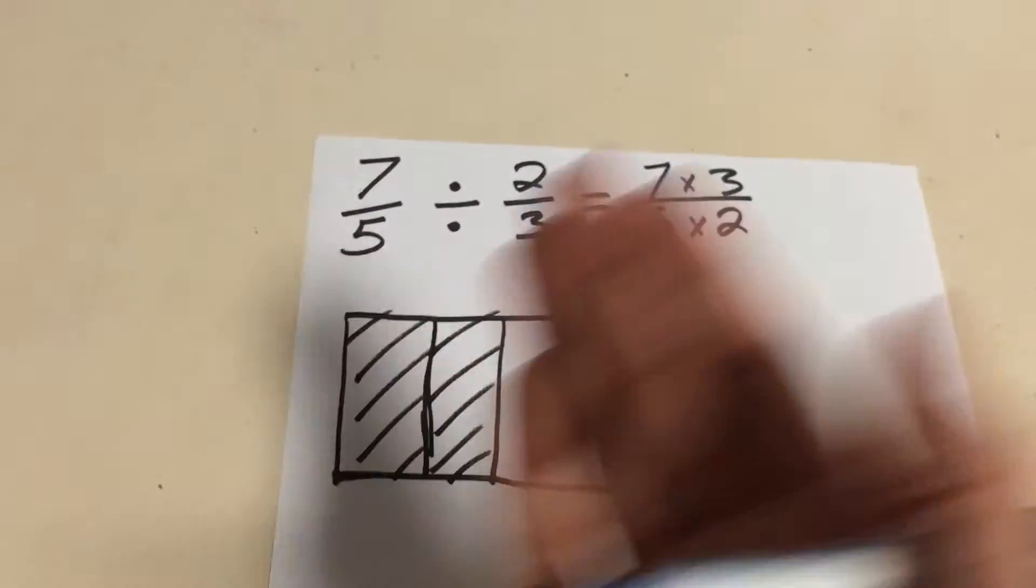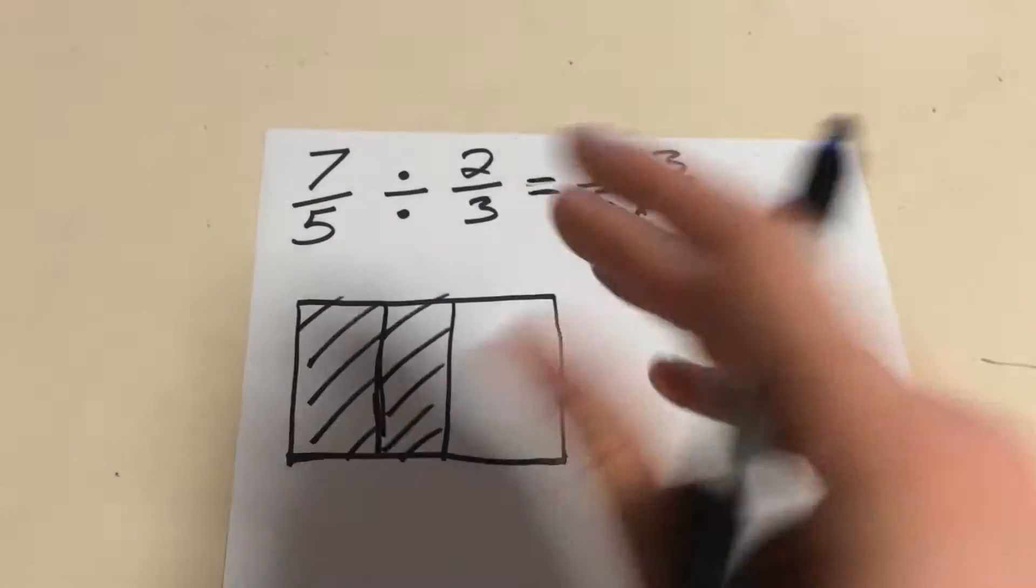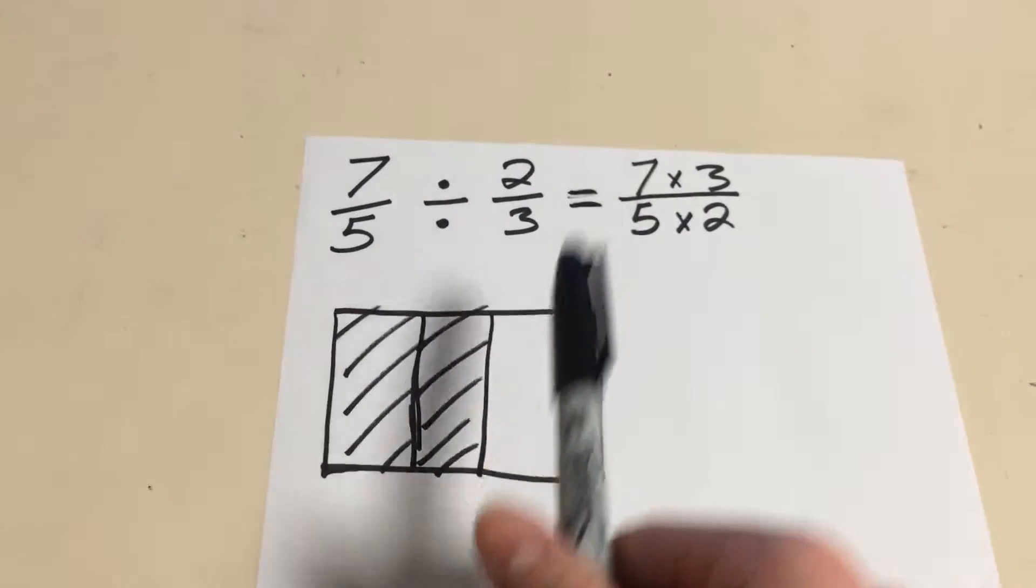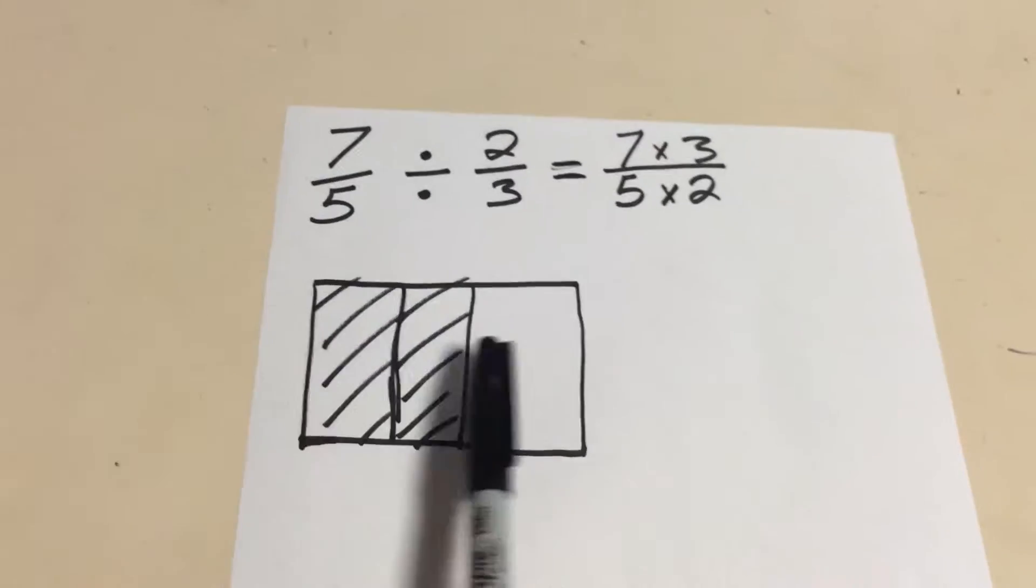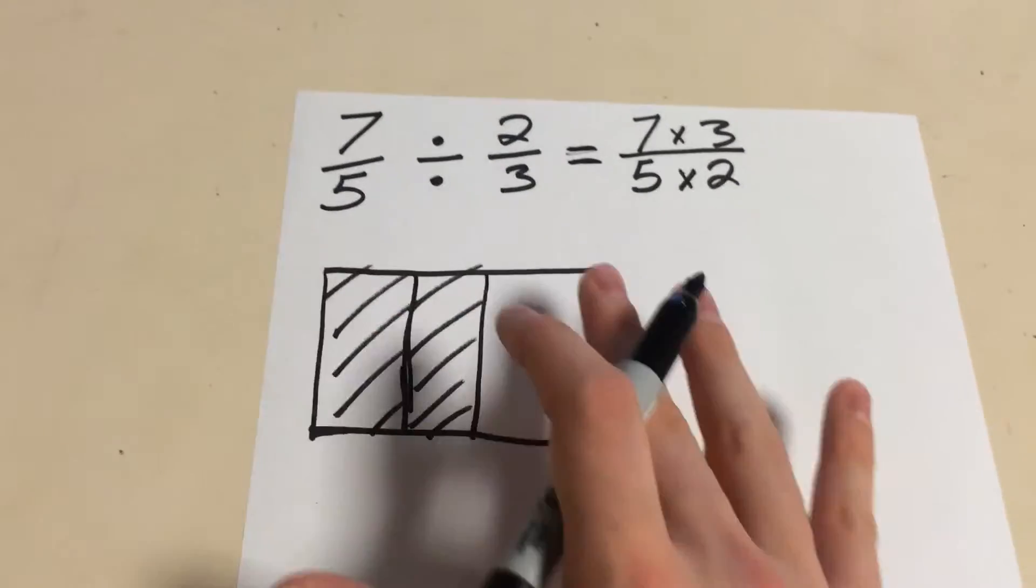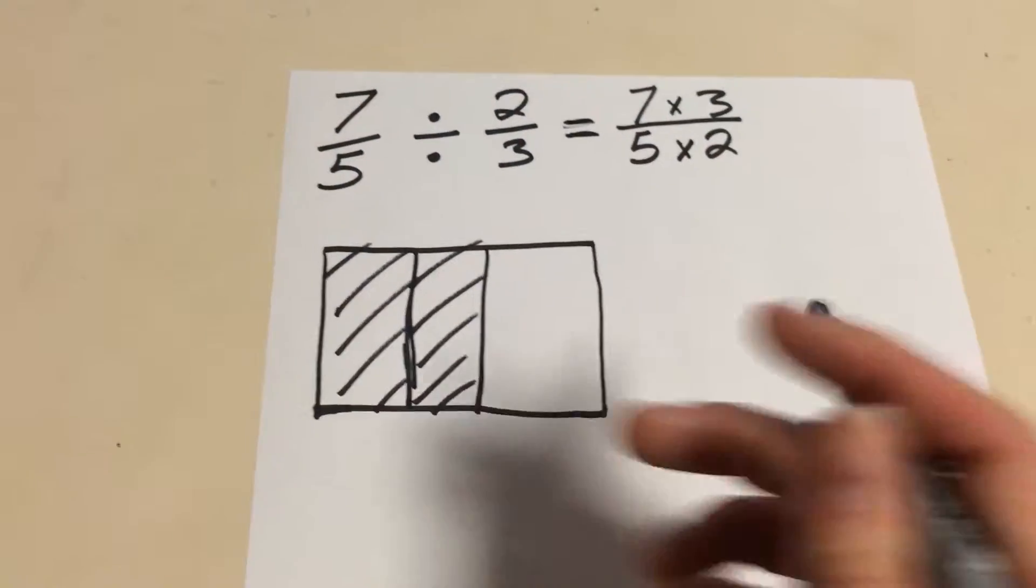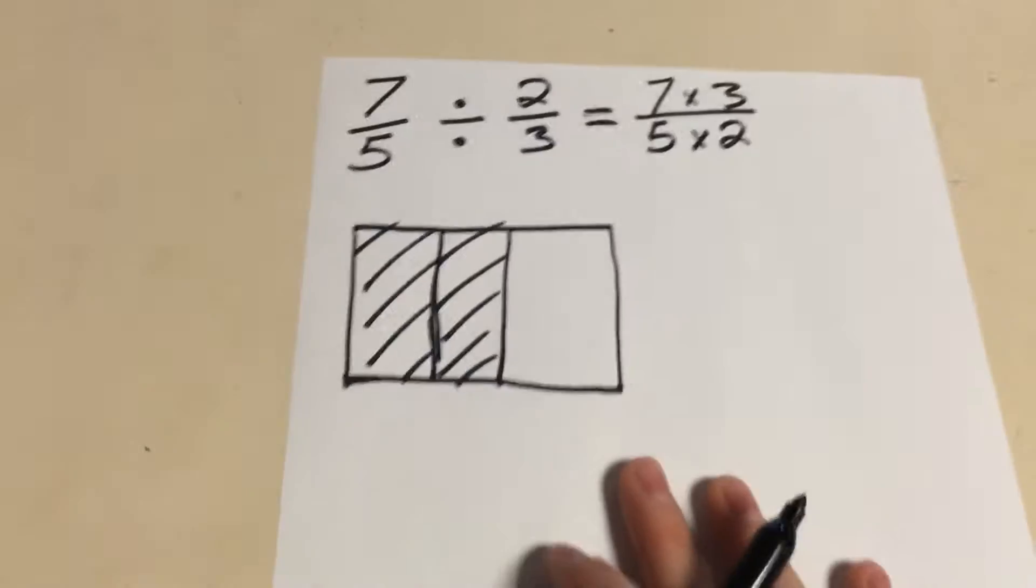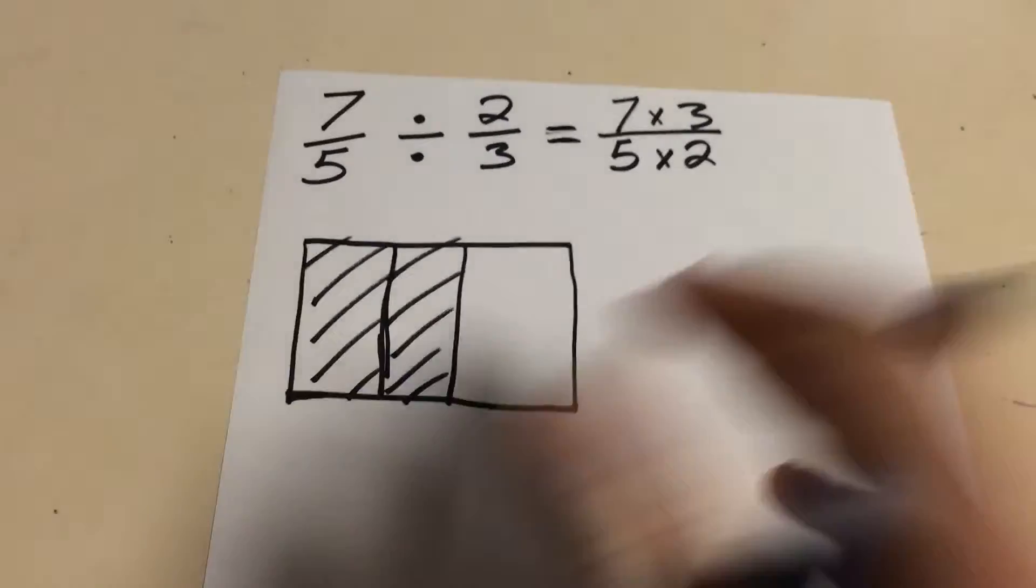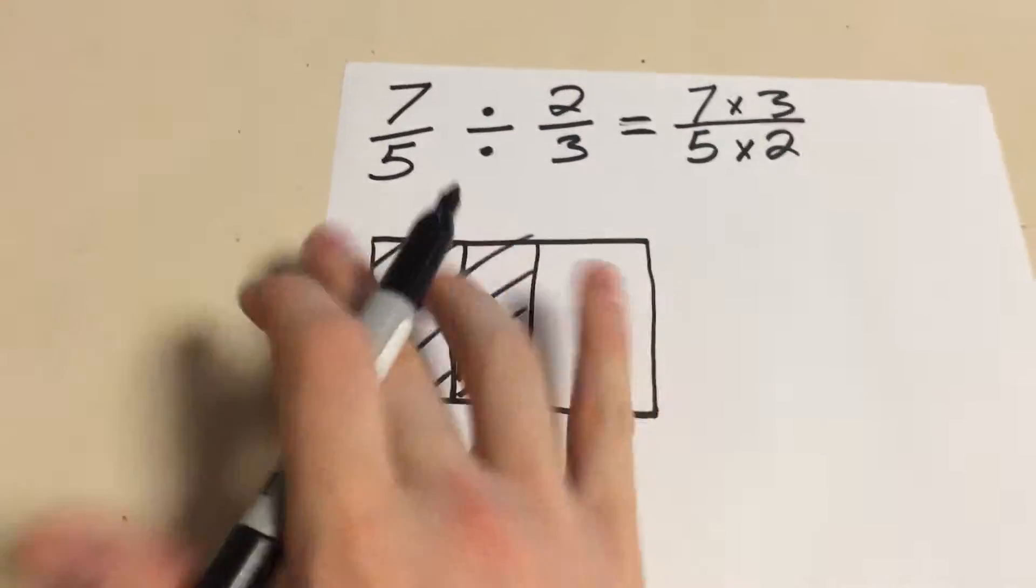Now with measurement division, you give a certain amount to each group. What we want to find is how much goes in one whole group. This whole square right here is our current whole. But to break things down a little bit, we're going to focus on these 2 thirds right here.